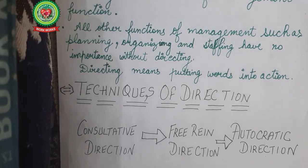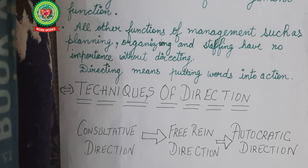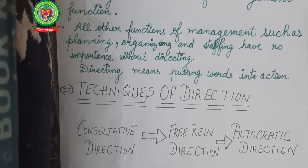Next is free run direction — it is a little more liberal than consultative. In consultative, terms are limited, but in free run, there is a friendly working environment where anyone can give suggestions to improve working conditions. Next is autocratic direction — autocratic means 'do what I say.' You have to do what the authority says; you don't have any right to argue, consult, give advice, or ask for any other solution. Simply, you follow the top level as they are the ones who direct you.